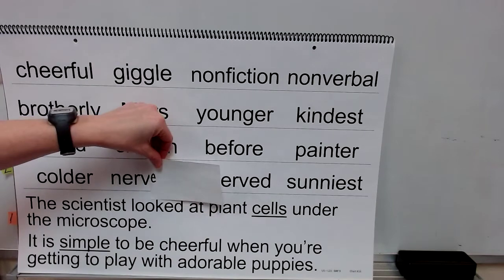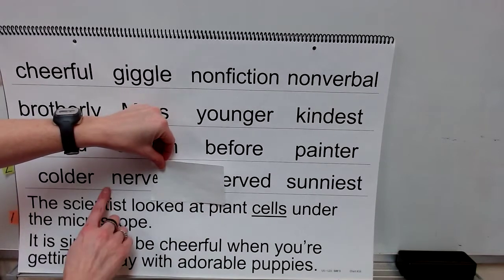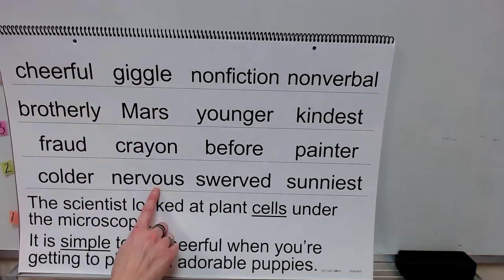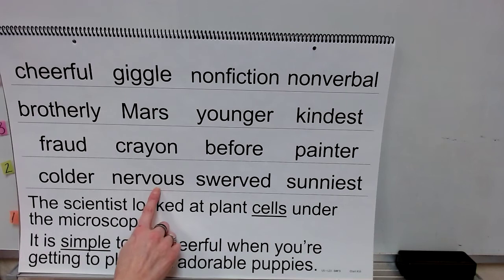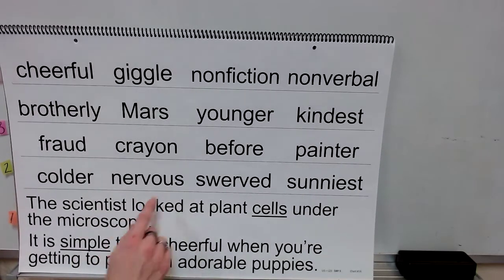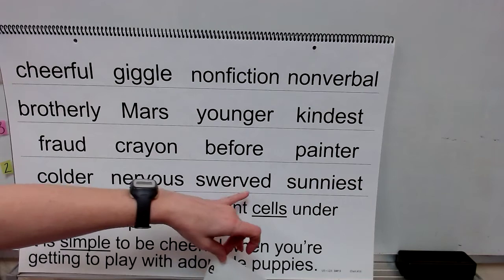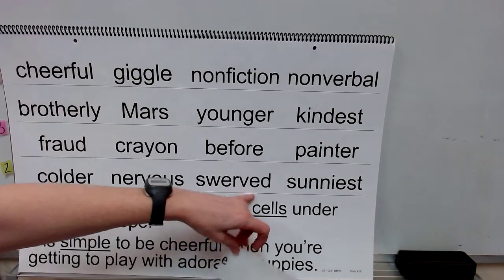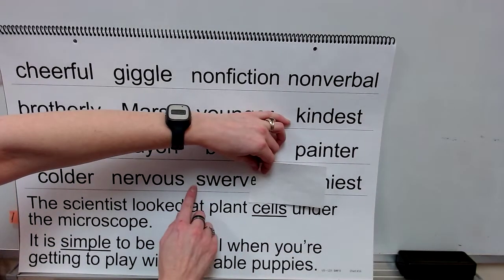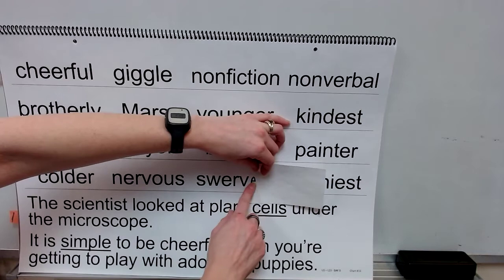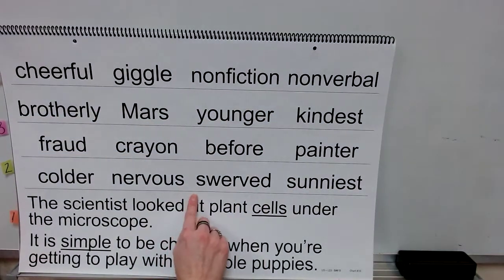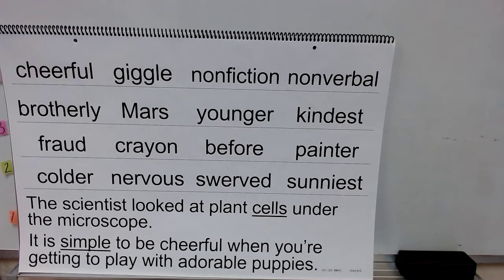This word has a spelling change. Base word: nerve. Drop the E, add your suffix: us. Word: nervous. This word has a spelling change. Base word: swerve. Drop the E, add your ending. What word? Swerved.